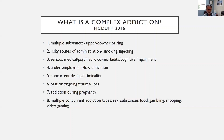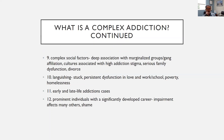Underemployment and low education can cause complexity. Concurrent dealing or criminality can make cases more complex. Paths of ongoing trauma or loss add complexity. Addiction during pregnancy is an added complexity. Multiple concurrent addiction types — like sex, substances, food, gambling, shopping, and video gaming — can make substance use disorders more complex.